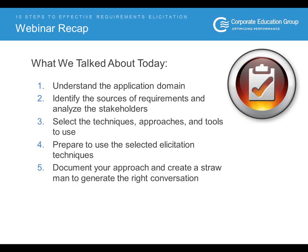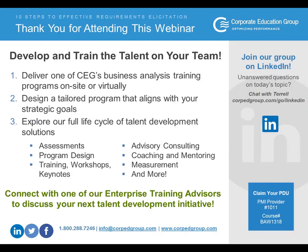We're going to wrap things up right now. Thank you for attending our presentation, '10 Steps to Effective Elicitation Requirements.' You can ask Terrell additional questions on our LinkedIn group page. This webinar qualifies for one PDU. The course number is BAW1318, reported under Category A, and our PMI provider number is 1011. Feel free to contact us on Twitter, Facebook, and LinkedIn. Thank you again for attending, and good luck on eliciting requirements.